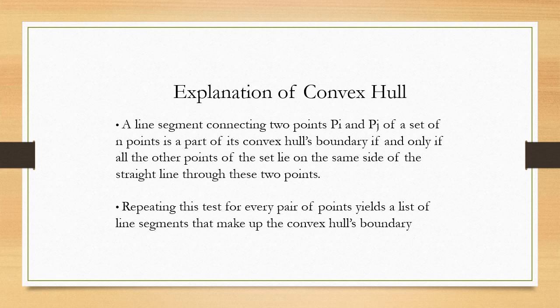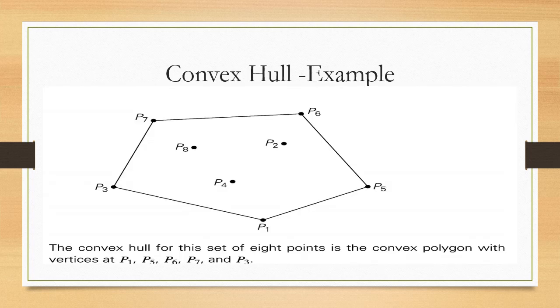Now we are going to see an example of this convex hull. We have eight points: P1, P2, P3, P4, P5, P6, P7, and P8. We have to connect the boundaries of these eight points. The convex hull for this set of eight points is the convex polygon with vertices at P1, P5, P6, P7, and P3. These five points are the boundaries of this polygon.